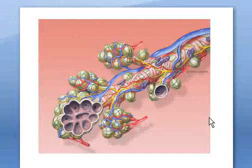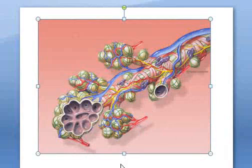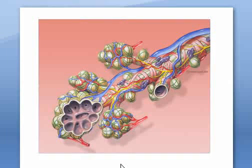This is a sketch of several alveolar sacs. An alveolar sac is composed of 30 or more alveoli. An alveolus is a functional unit of lungs where exchange of gases takes place. It is surrounded by a network of tiny blood vessels — these blue and red ones.